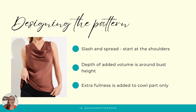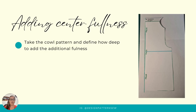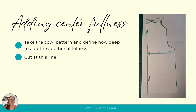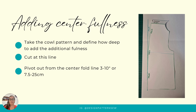In this variation of our cowl we see that we have added volume around the bust height, pulling the cowl away from the neck and away from the body. Extra fullness is added only to this area. We'll take our cowl pattern and define how deep to add the additional fullness. Since we saw it was around bust height — slightly below our armpit — we'll draw a line. We're going to cut at this line and leave a millimeter at our center fold so that we could pivot this without the pieces coming apart.